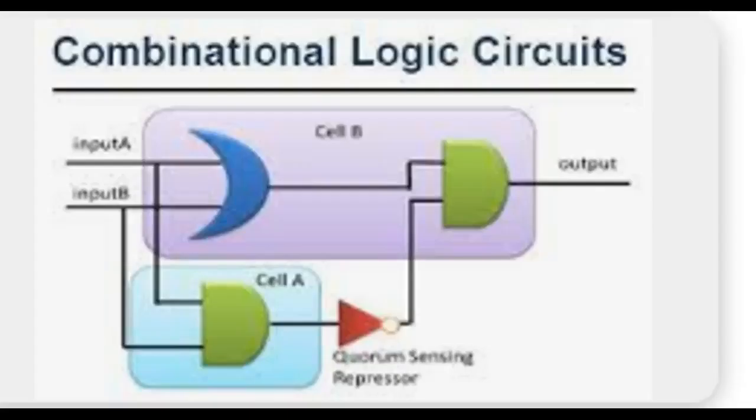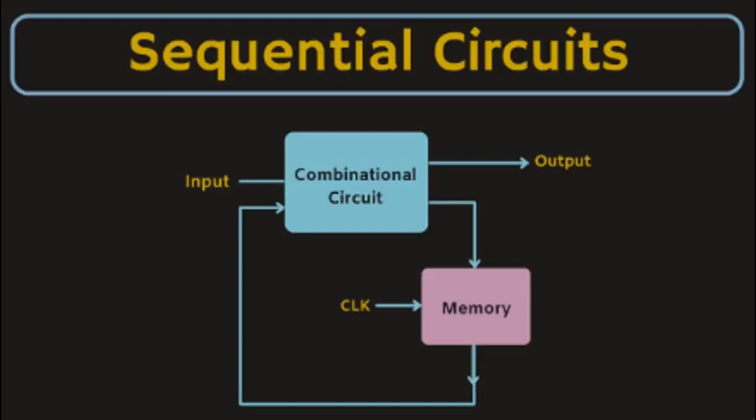Combinational logic refers to digital circuits where the output is solely determined by the current input state without any regard for previous inputs. Sequential logic refers to digital circuits where the output depends not only on the current input but also on the past history of inputs. This is achieved using elements like flip-flops to store information.